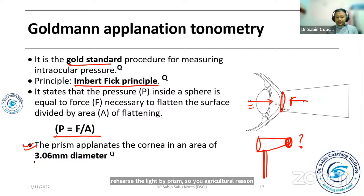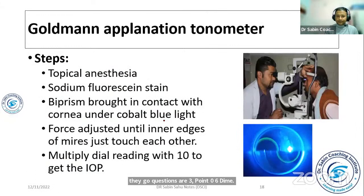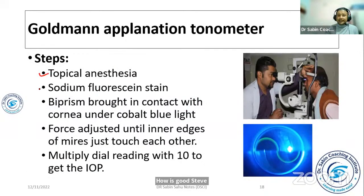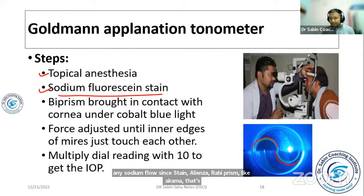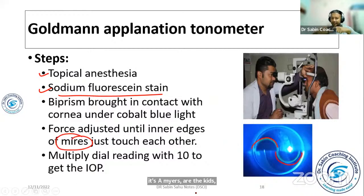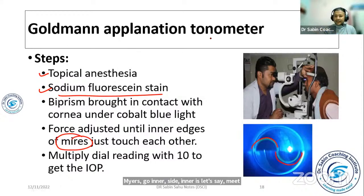The prism flattens a corneal area of 3.06 mm diameter. The reading is taken from the inner semicircles and measured on a scale.